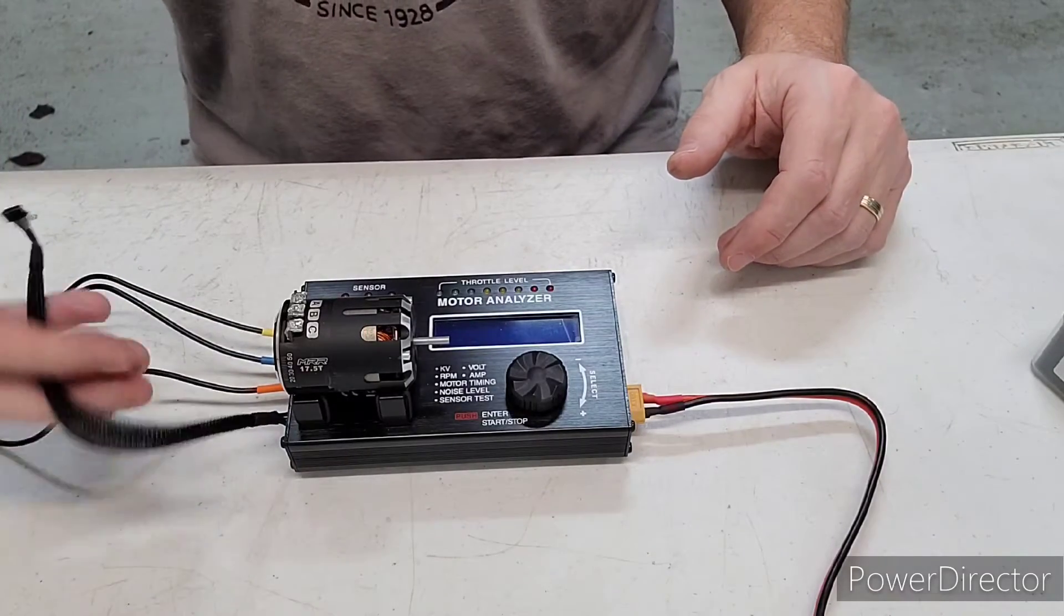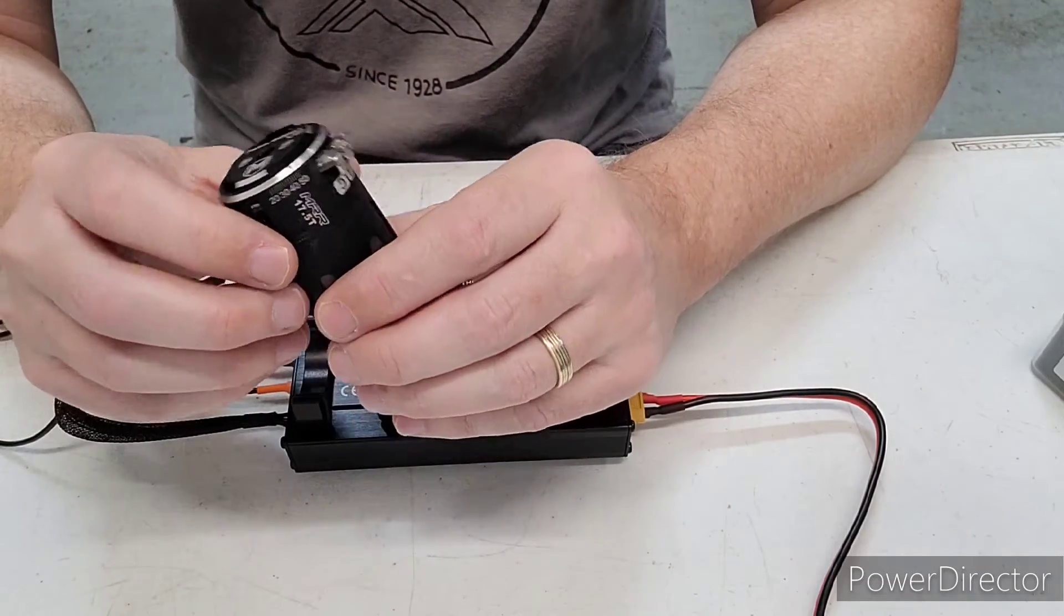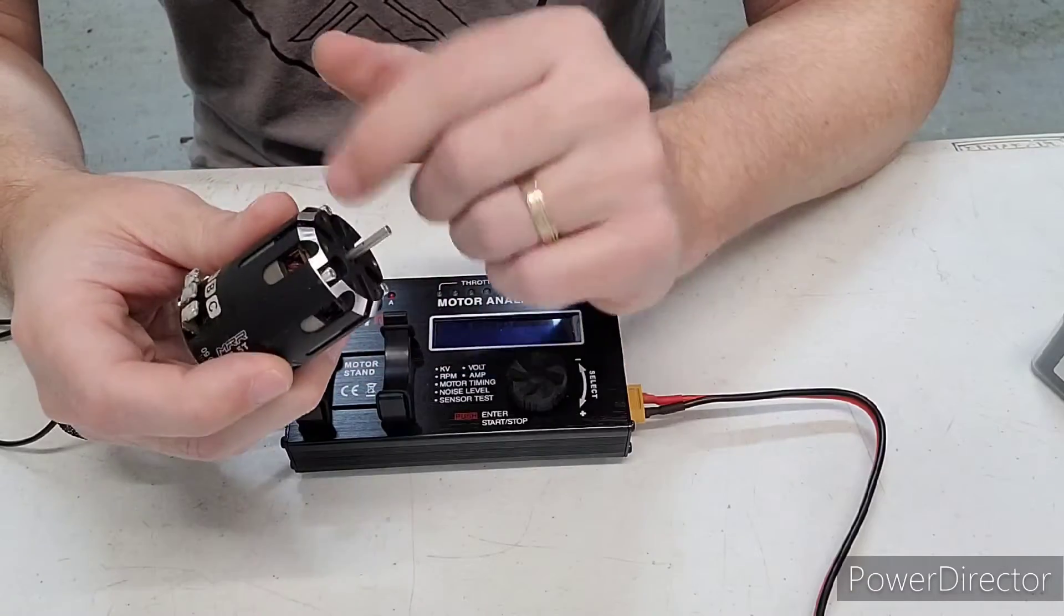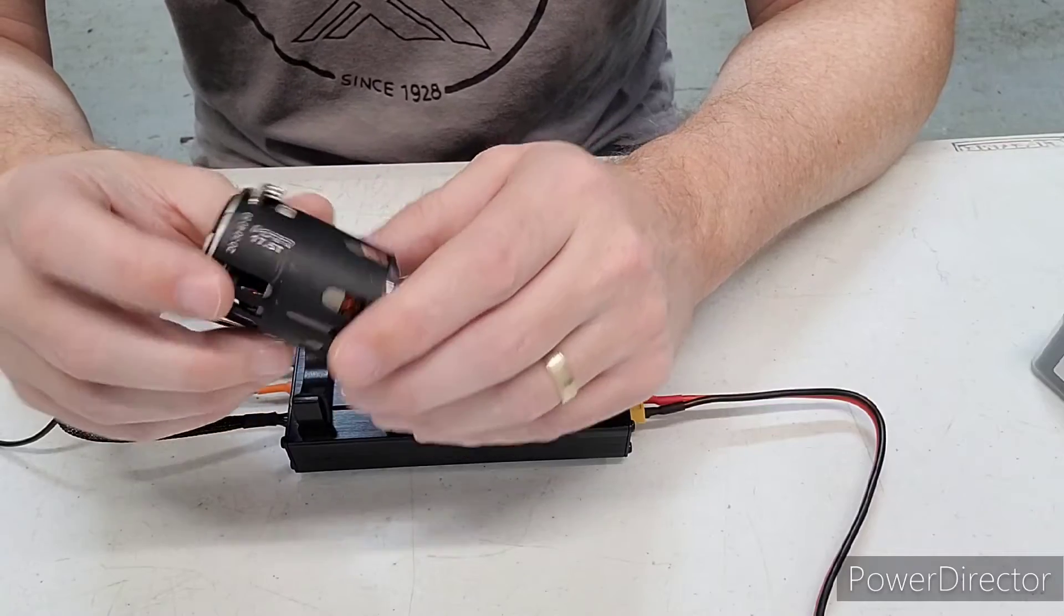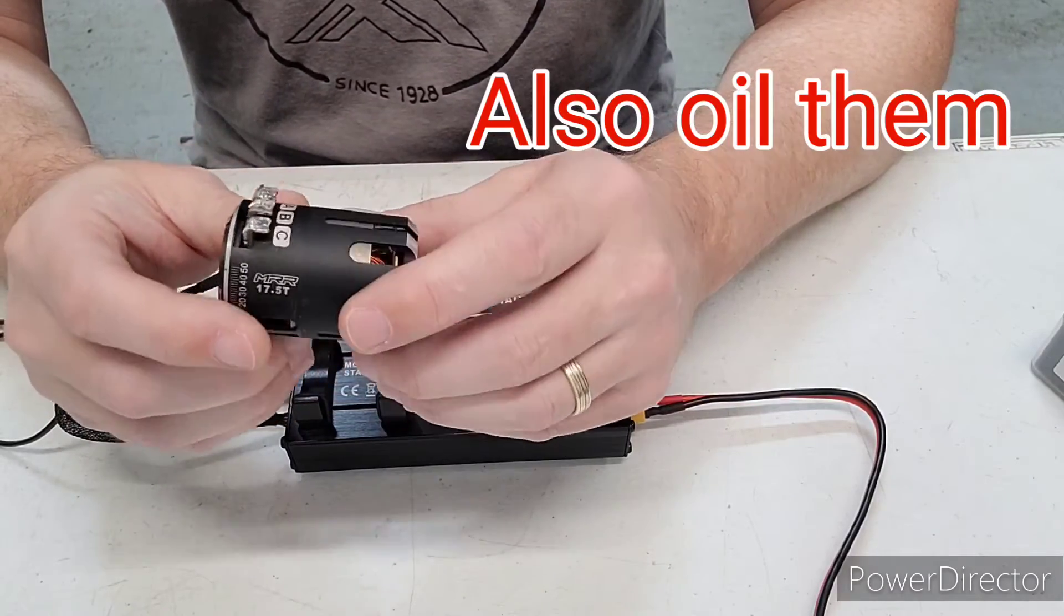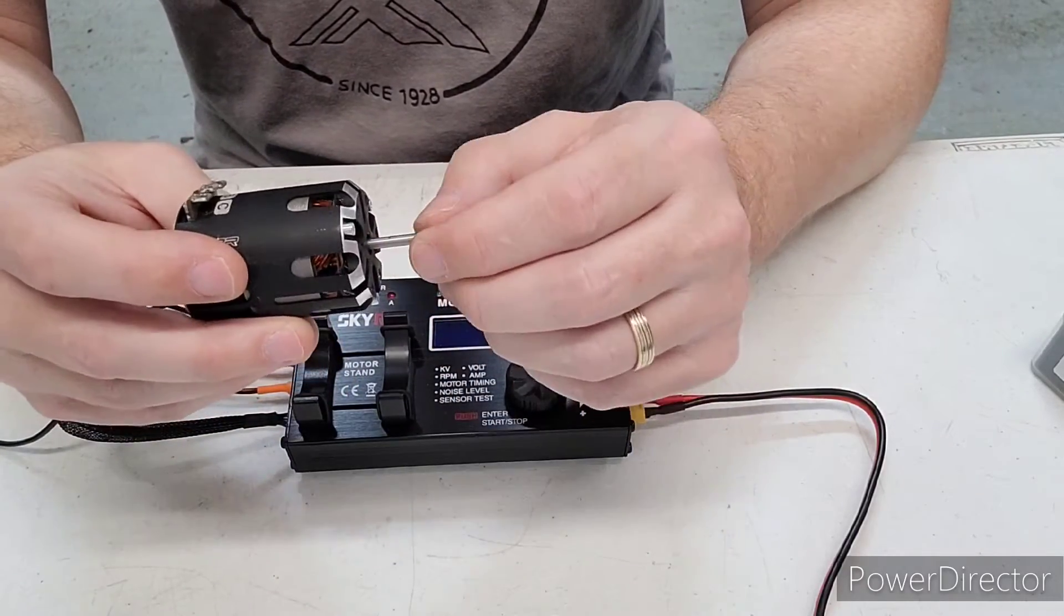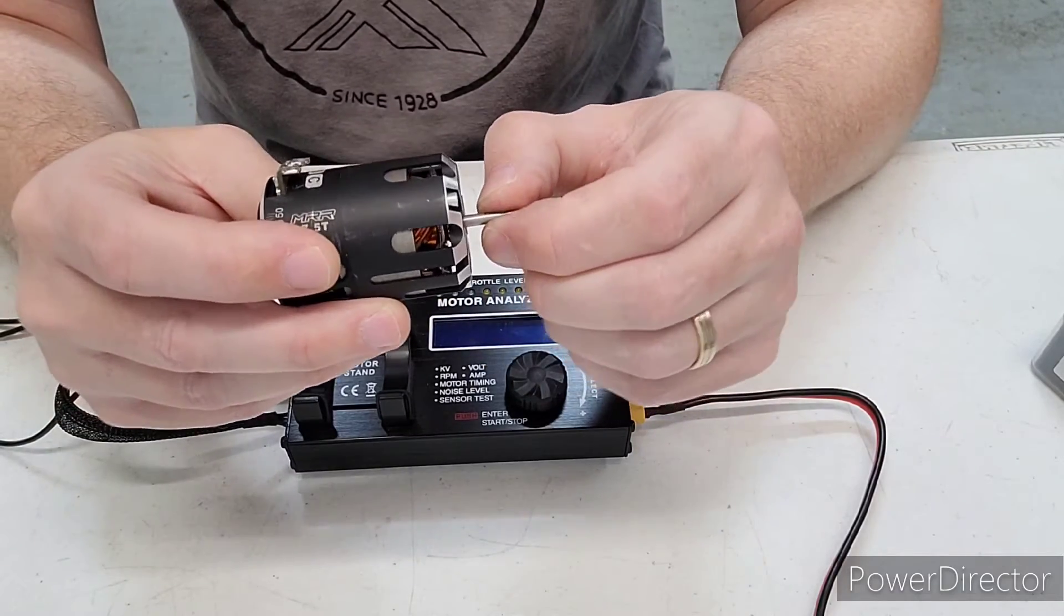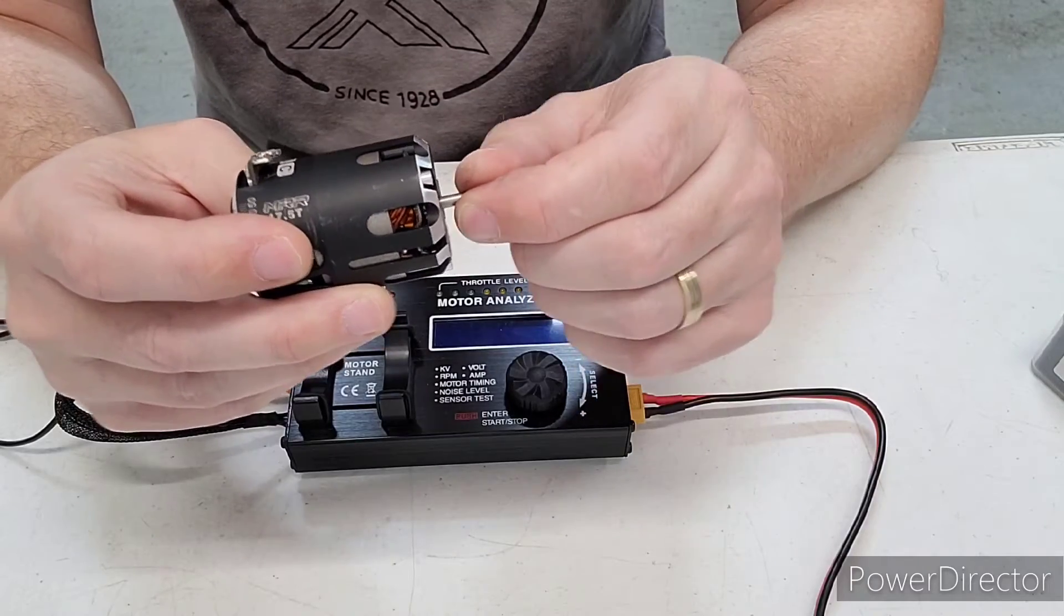So once you get your motor here, really the first thing you want to do before you hook it up is you want to take this thing apart and make sure the bearings are in good condition. And if they're not, replace them. And then the other thing is, is these rotors oftentimes will have shims and you want to make sure that they're shimmed where they have just a tiny bit of play.